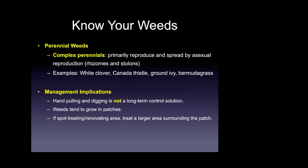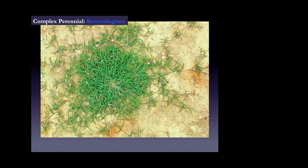A good example of a complex perennial is bermudagrass — a major warm-season turfgrass species, but if it's growing in the middle of centipede, zoysia, or fescue, it can be a long-term invasive weed. If not controlled early, bermudagrass will spread from lateral stems and the competition can eventually require lawn renovation, because selective control of bermudagrass is very difficult in many warm- and cool-season turfgrass species.